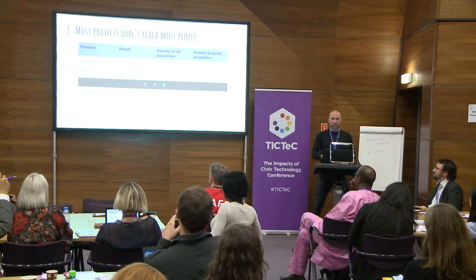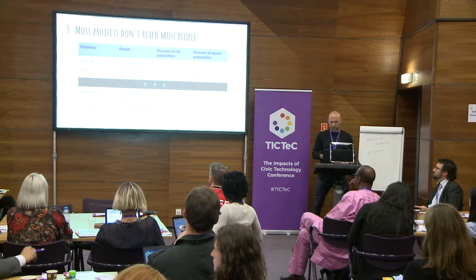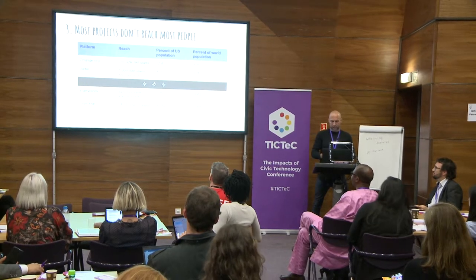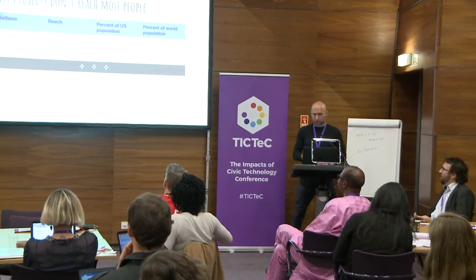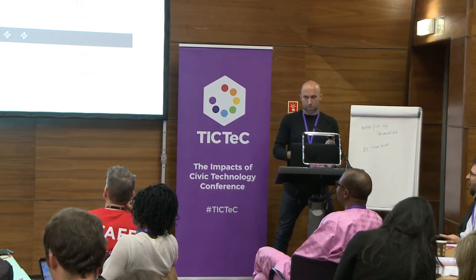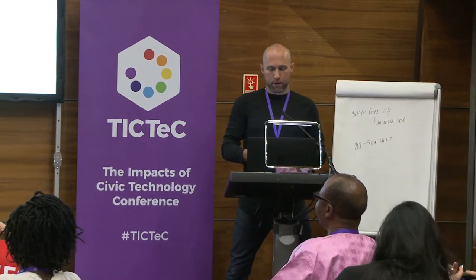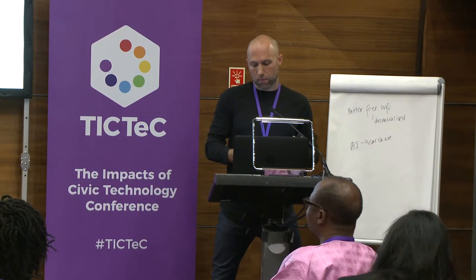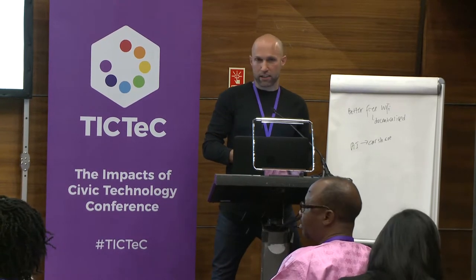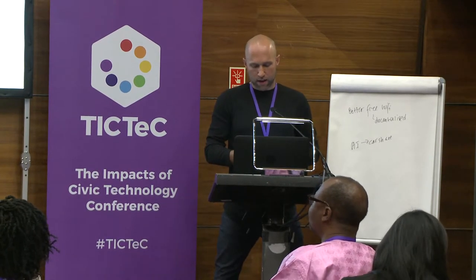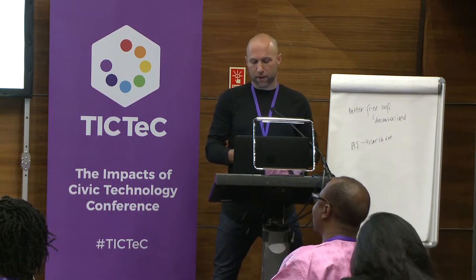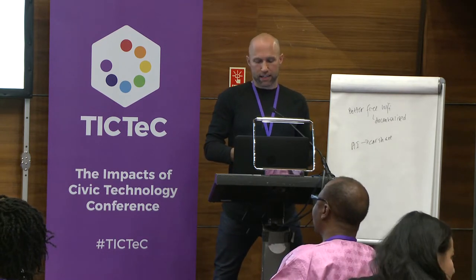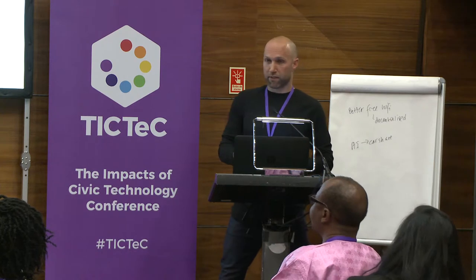We do have one common metric in this space: scale — how many people did you reach? If it's a big number, you hear about it. The juggernauts like Avaz and Care2 put it right on their homepages: 42 million email members, 8 billion signatures. But we don't hear about it from most civic tech products. The majority of civic tech products we've evaluated reach well under 20,000 users, and even well-funded projects like Jumo and EveryBlock reached a very small percentage of Americans.